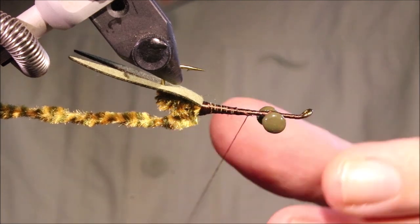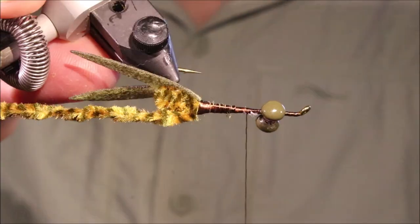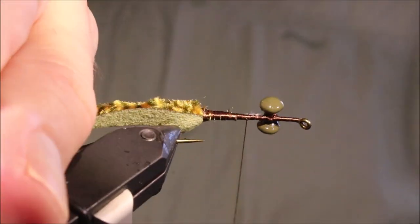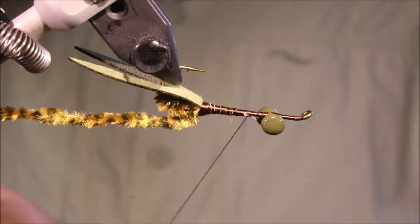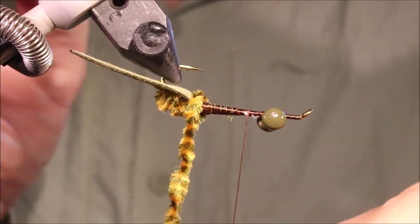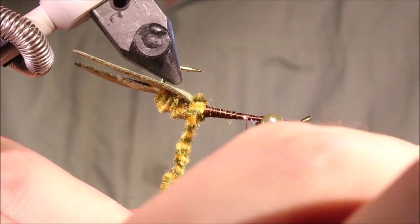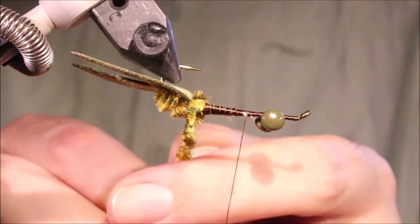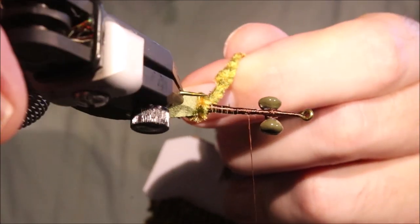I'll put a half hitch here, because I've marked my spot where the chenille body is going to end. I'm going to take this up, right up against the claw, so there's no any gap.